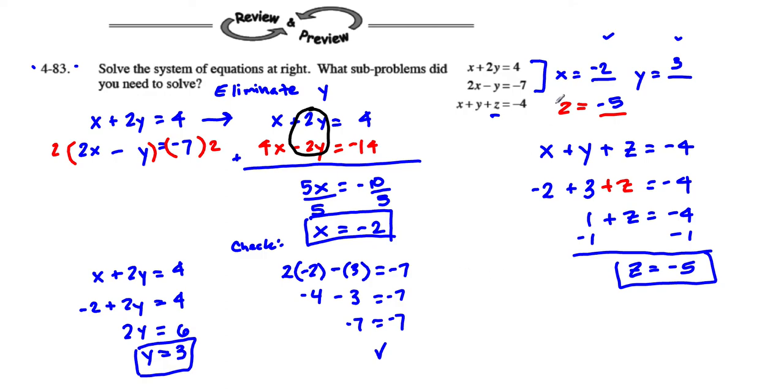So our answers to this problem: x equals negative 2, y equals 3, z equals negative 5. We can also write it as an ordered pair with 3 units in it. We'd say negative 2, 3, negative 5 if you wanted to do so. This is problem 4-83. If you have questions or if you solved it differently and you did not get the same thing, then you may want to go back and check it. This is Mr. Boyd. If you have questions, ask your teacher. Thanks for listening. Hope this helped.